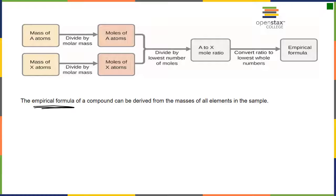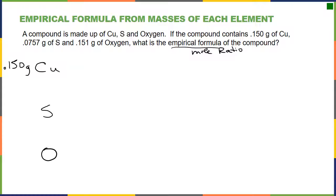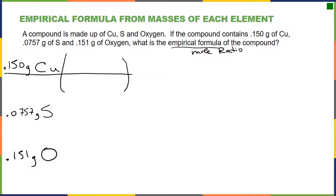To find the empirical formula, we need the simplest ratio of moles of the atoms in the substance. We start with mass, because that's what we find in the lab. We divide by molar mass to get moles, then divide by the lowest number of moles to get the mole ratio. For example, we have a compound made of copper, sulfur, and oxygen. We start with 0.150 g of copper, 0.0757 g of sulfur, and 0.151 g of oxygen.